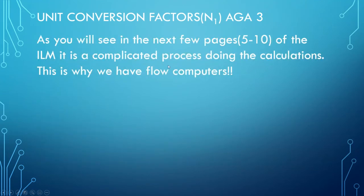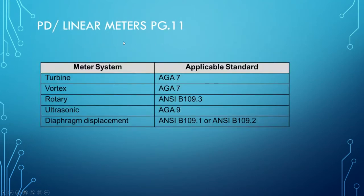Pages five to ten of the ILM show it's a complicated process doing all these calculations, and long story short, this is why we have flow computers — the potential for human error and the complexity are significant challenges. For PD or linear meters, as shown on page seven, there are AGA standards that apply to specific devices, so you need to understand which end devices you're using and what the appropriate AGA standard is.